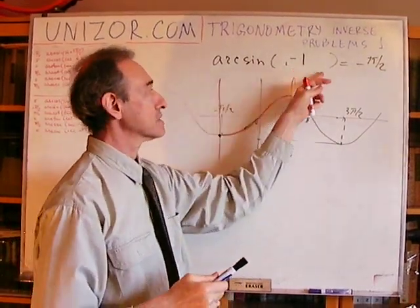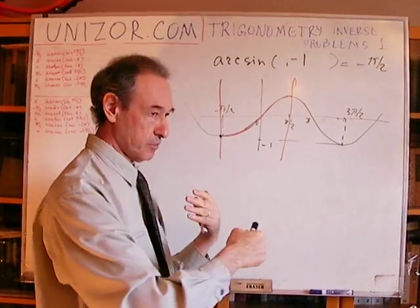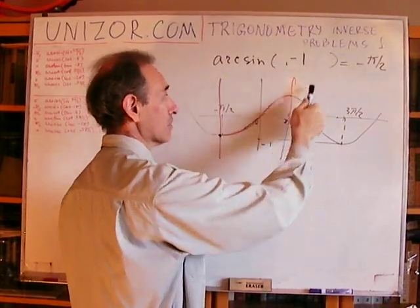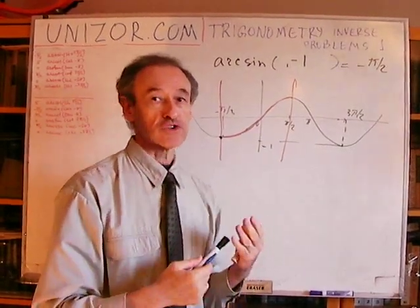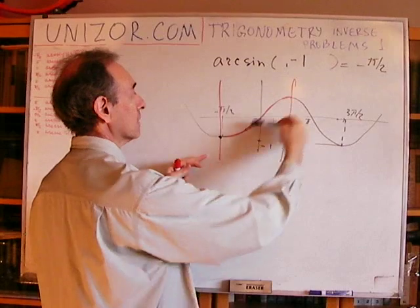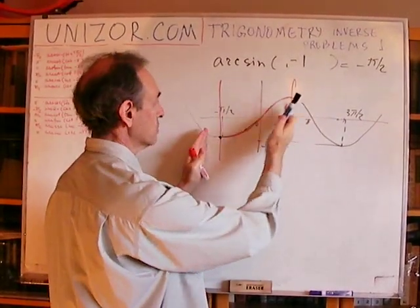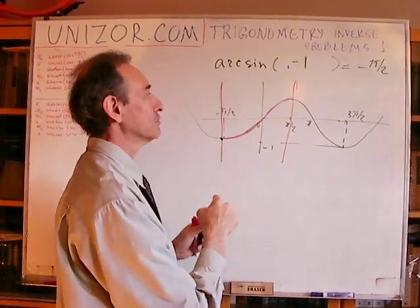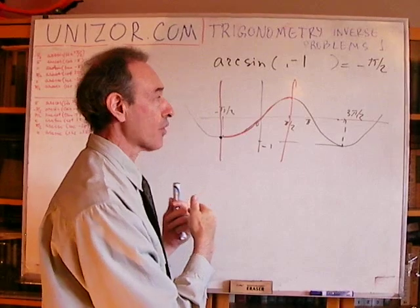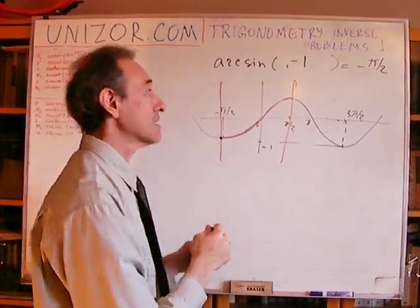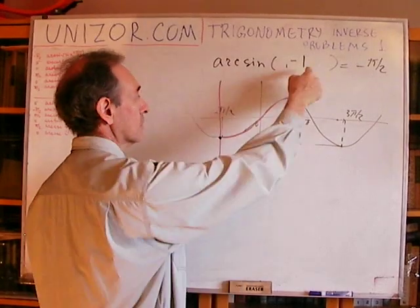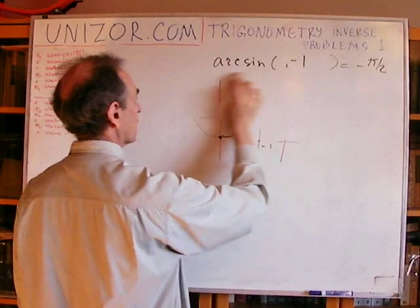So regardless of the fact that we started with 3π/2, when we perform sine and arc sine, we have to shift to the point which has exactly the same sine as 3π/2, but belongs to the area where arc sine takes values — the range from minus π/2 to π/2. The answer to this problem is minus π/2. The domain for arc sine is from minus 1 to 1, but the range is only between minus π/2 and π/2, and that's where we have to find the value.